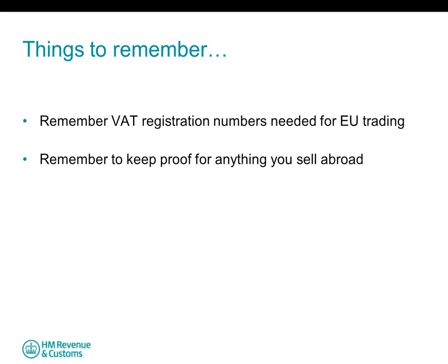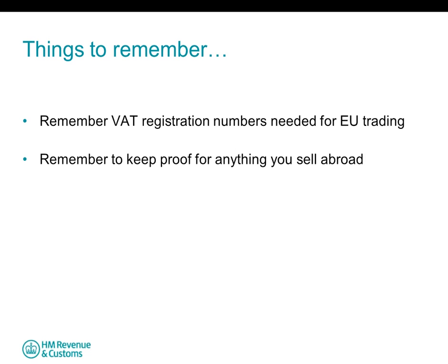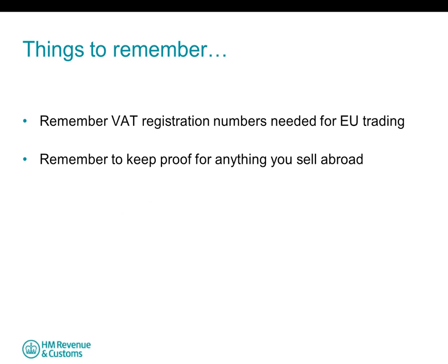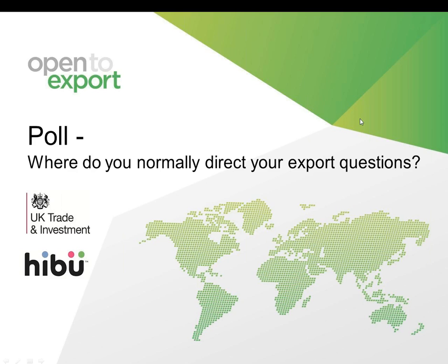For VAT purposes when exporting goods to countries outside the EU: you can zero-rate exports as long as the goods leave the EU and you hold evidence of this within three months from the time of supply. If goods don't leave the EU within three months, or you don't hold the evidence in time, you will be required to account for VAT at the normal UK rate. The value of those sales is shown in box 6 on your VAT return — not box 8, which only deals with EU sales.